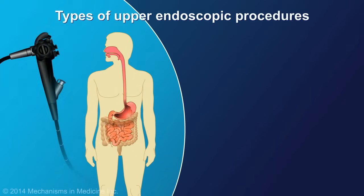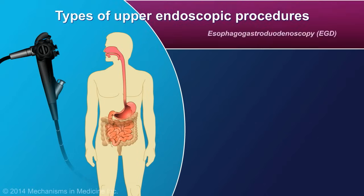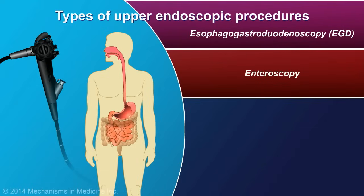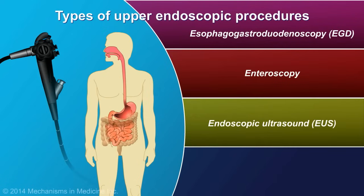Depending on what is being examined, several other types of endoscopic procedures can be used. Esophagogastroduodenoscopy, or EGD, is used to examine the lining of the esophagus, stomach, and duodenum. Enteroscopy is used to examine deeper into the small bowel and is useful when other imaging techniques have shown an abnormal finding that can't be reached using EGD or colonoscopy. Endoscopic ultrasound, or EUS, combines endoscopy with ultrasound to obtain images and tissue samples of the surrounding organs along the GI tract.